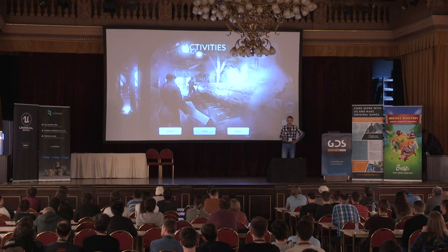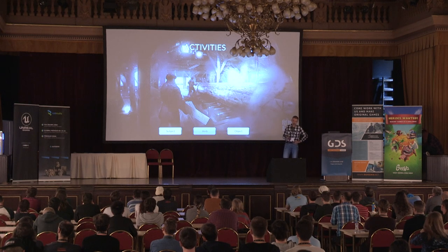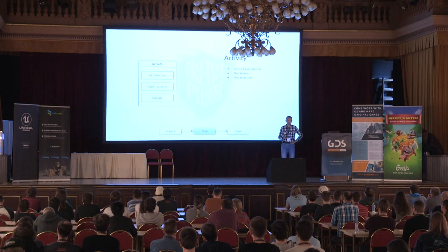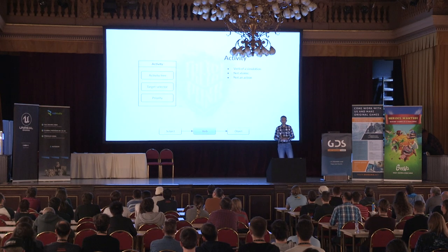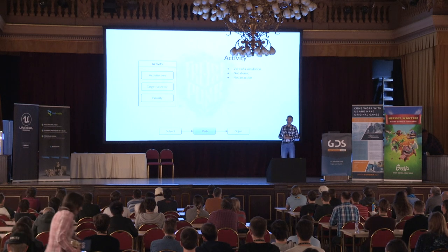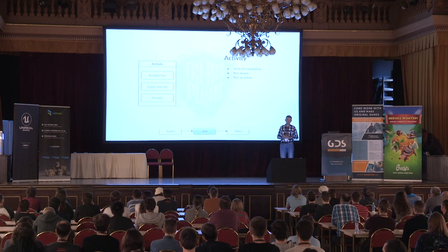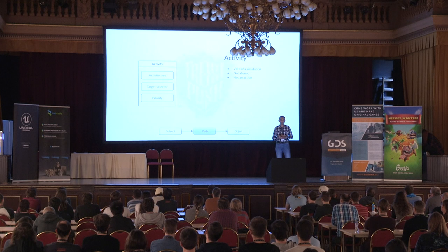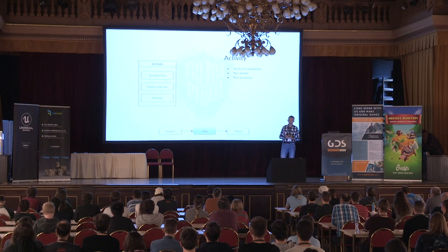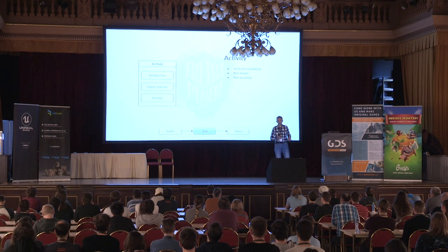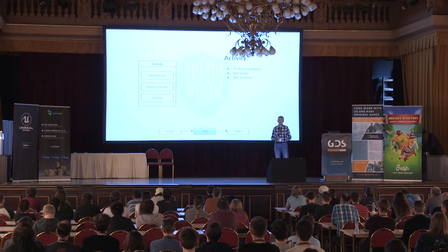Now let's talk about the verb. We came up with an abstraction called activity. Activity is the verb in our simulation, but we also have an abstraction called an action. Activity is the state in which the agent is currently in, as opposed to an action, which is the thing the agent is currently doing. For example, working at a coal mine is an activity, while using a pickaxe is an action.